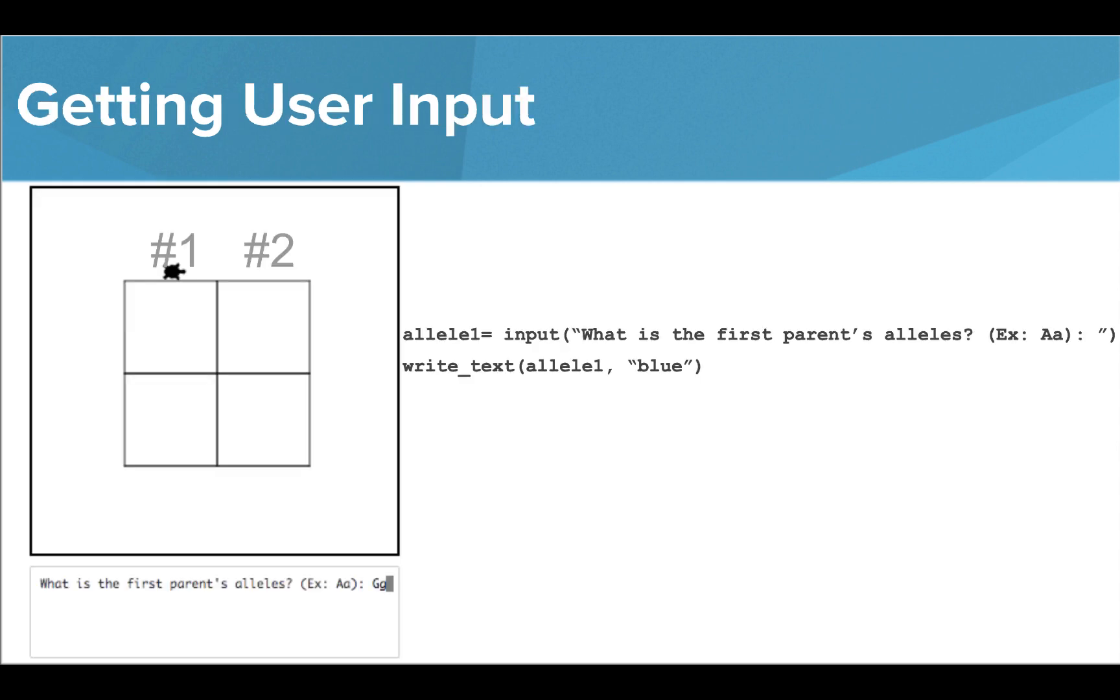If I use the commands written here, all of the letters stored inside my variable, allele one, will print at location one. But I can index these values to print one at a time in different locations. In this case, the capital G is stored at index value zero, and the lowercase g is stored at index value one. So if I want to only print the capital G at location one, I can alter my write text command to only print the letter found at index zero, which is the capital G.